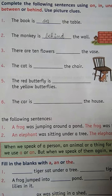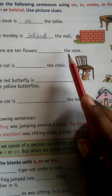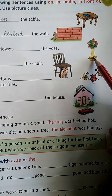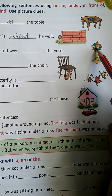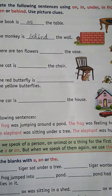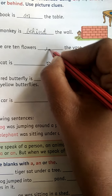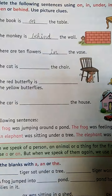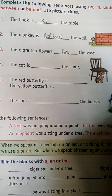There are ten flowers — blank — the vase. This is vase, and these are flowers. Toh flowers kahan hain? In the vase. In the vase. In means andar.